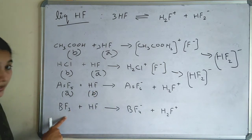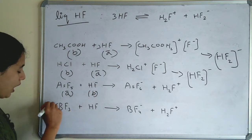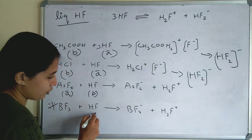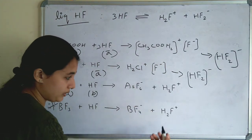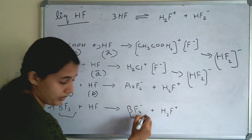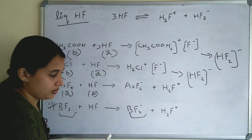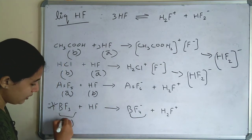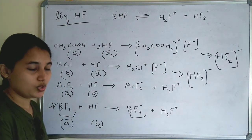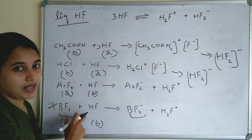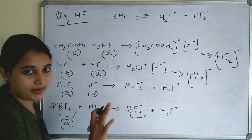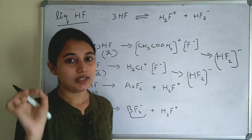The last example: BF3 + HF → BF4⁻ + H2F⁺. This has been asked in a previous exam. BF3 is converted to BF4⁻ — fluorine is accepted — so BF3 is the acid and HF is the base. The previous exam question was: BF3 is acting as acid or base in liquid HF? Answer: BF3 acts as an acid in liquid HF.